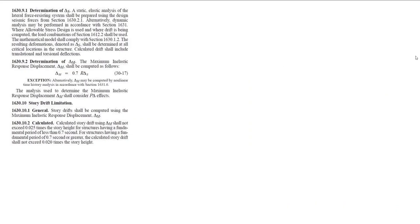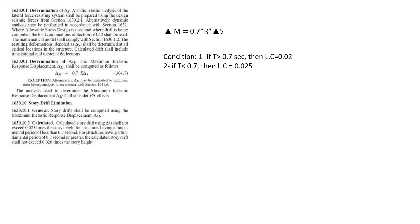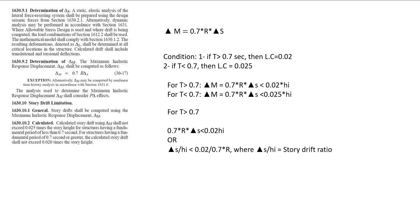To check the analysis against drift ratio, let's have a look at the relevant section of the UBC code. Our reference equation will be the maximum inelastic response displacement, or delta M, as shown. There are two underlying conditions with a limiting constant of 0.02 or 0.025, which are dependent on the time period of the building. In our case, T is greater than 0.7, therefore a limiting constant of 0.02 will be used. As story drift ratio is story displacement divided by story height, we can rearrange the equation in terms of drift ratio as shown.